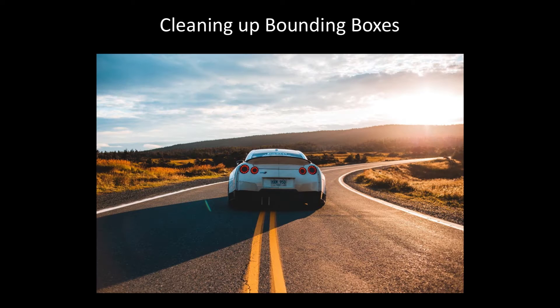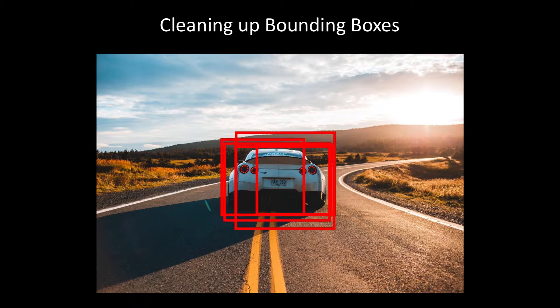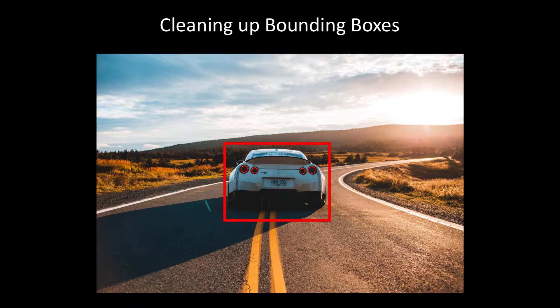Our goal is to clean up bounding boxes. More specifically, we have an image with an object — in this case, a car — and from our model we're going to get some bounding box predictions for that object. As you can see, we have multiple bounding boxes in many cases. We want a method of cleaning these up so that after applying non-max suppression, we end up with one bounding box prediction. So let's just say that from our model we get three bounding boxes for this object, and each of them has a probability score associated with that box.